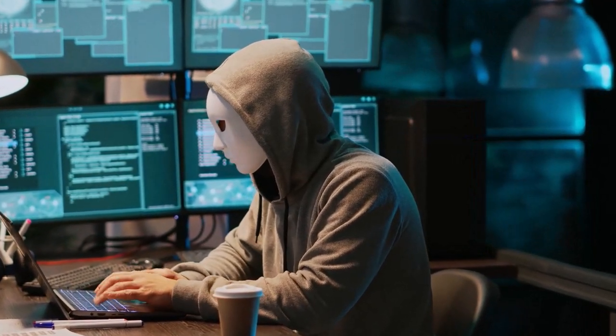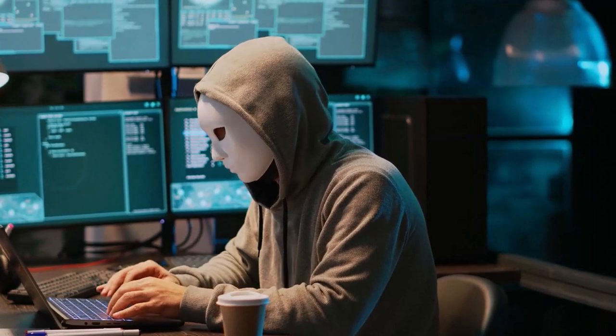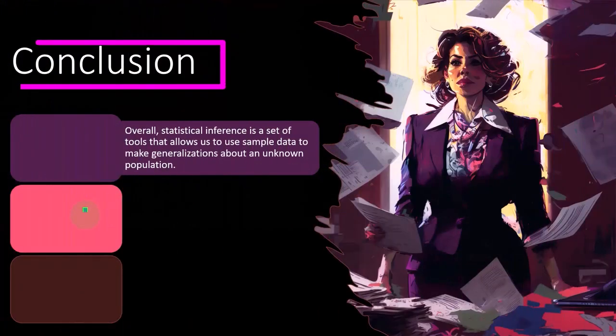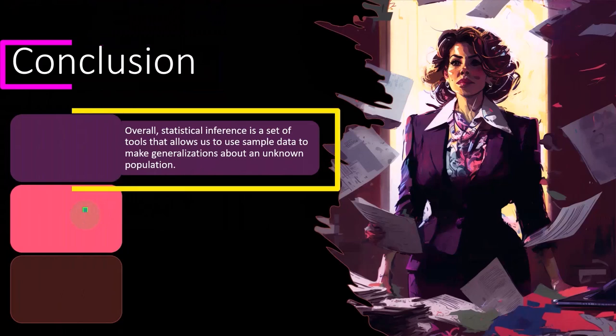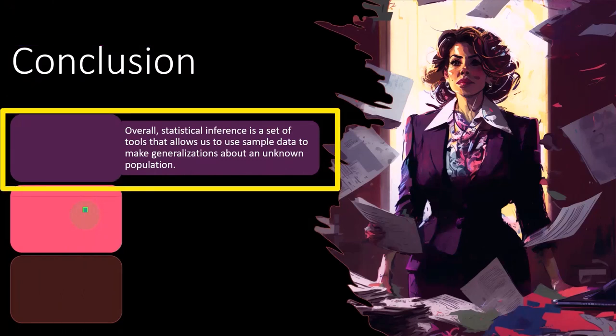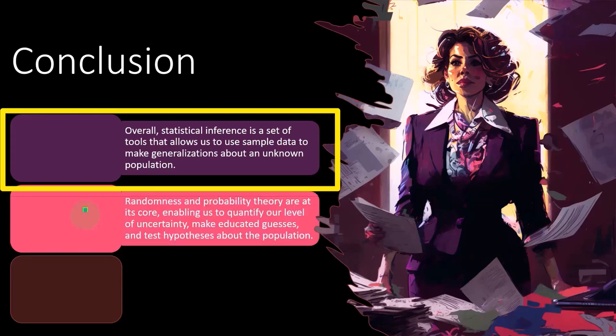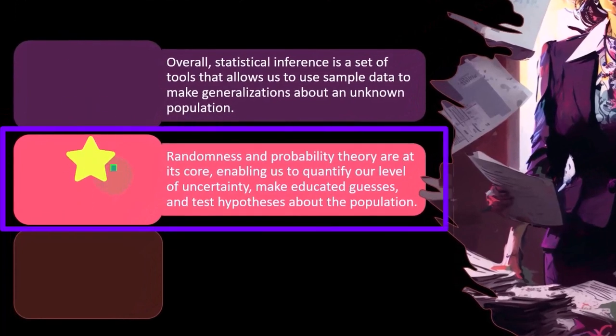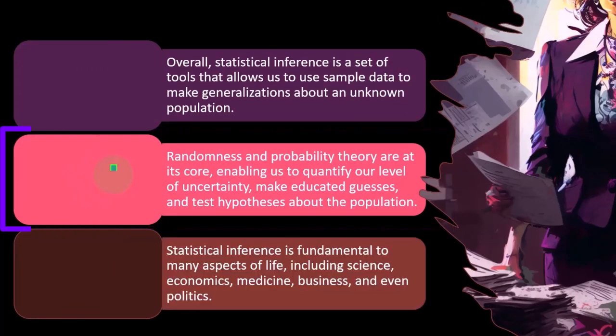So then, okay, I think I have to remove from my innocent, you know, to guilty. Okay. So conclusion, overall statistical inference is a set of tools that allows us to use a sample data to make generalizations about an unknown population. So randomness and probability theory are at its core, enabling us to quantify our level of uncertainty, make educated guesses, and test hypotheses about the population.